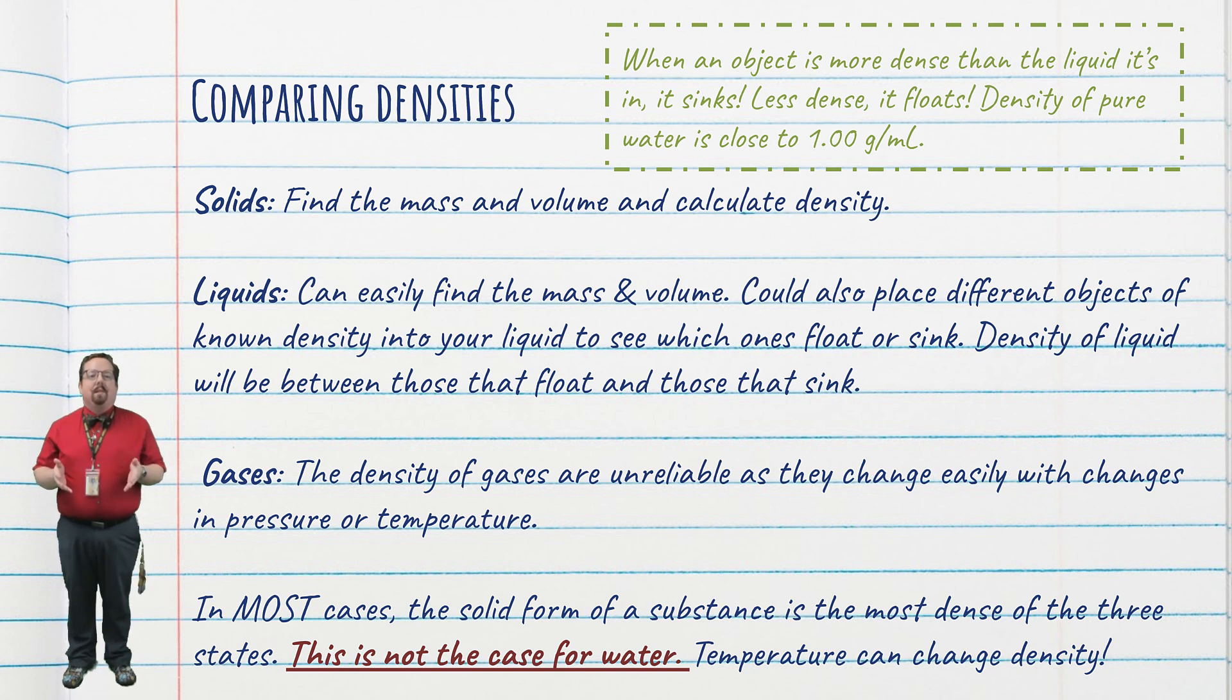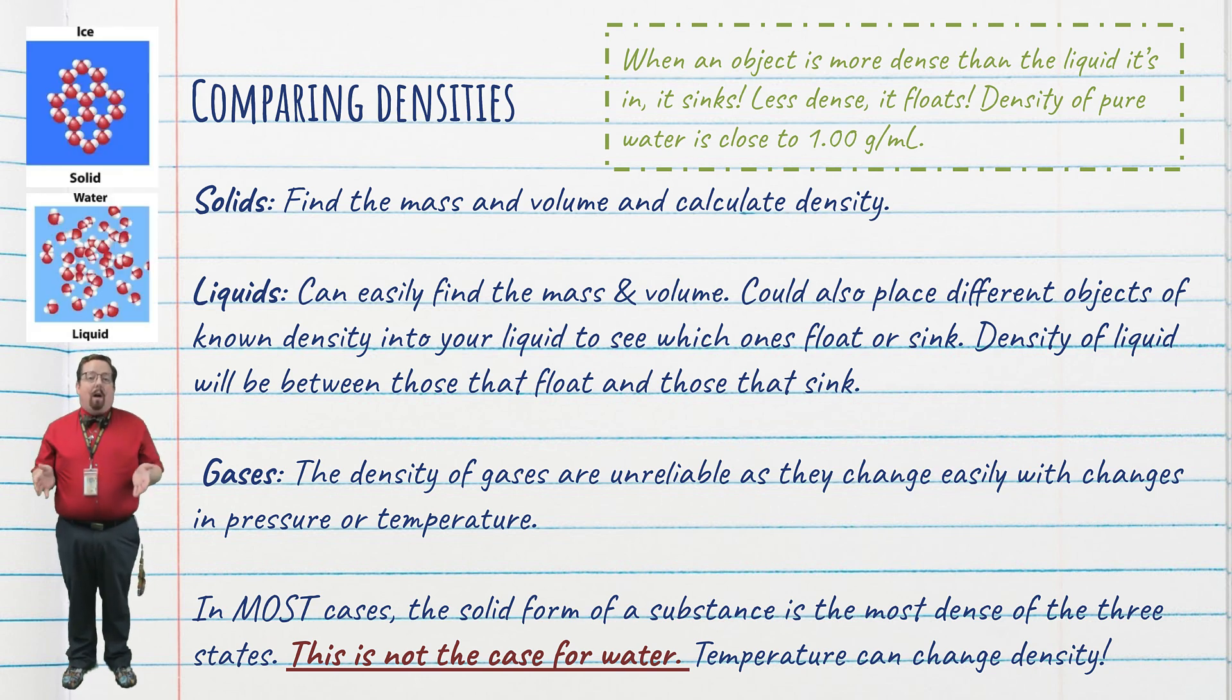For most substances, the solid form of the substance is the most dense of the three states of matter. Liquid is a little bit less dense than a solid, and gas is way less dense than either. This is not the case for water, since ice, the solid form of water, is a little bit less dense than liquid water. That's why ice floats when you have a glass of ice water.